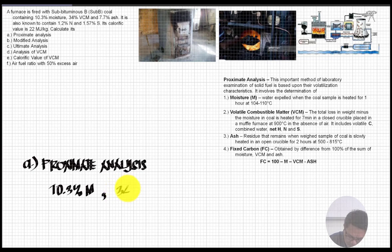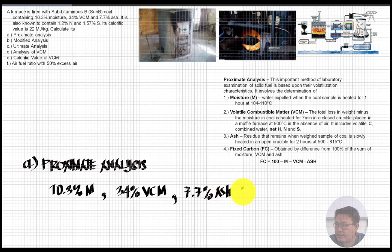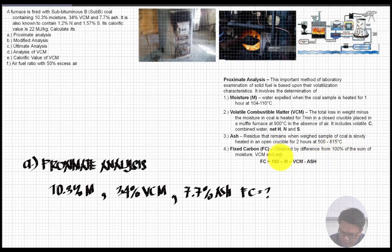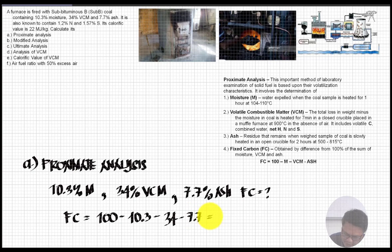For the BCM (volatile combustible matter), we have 34 percent — this is given in the problem. For ash, that is also given: 7.7 percent. What we don't have yet is the fixed carbon, which is the only unknown. Fixed carbon is obtained by difference: 100 percent minus the sum of moisture, BCM, and ash. So: Fixed Carbon = 100 − 10.3 − 34 − 7.7.